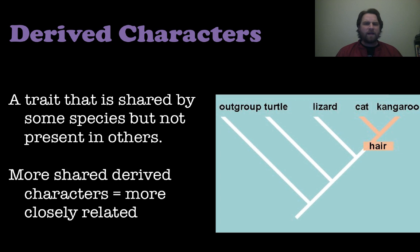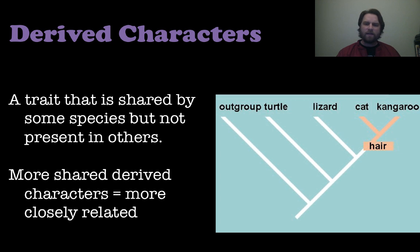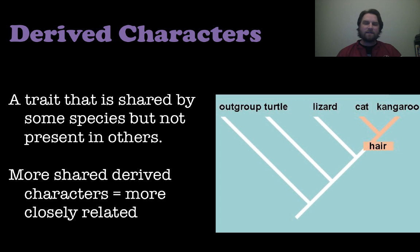The key thing to know about cladograms is derived characters — traits shared by some species but not present in others. The more shared derived characters two species have, the more closely related they are. For example, in a cladogram with a turtle, lizard, cat, and kangaroo, hair is a derived character that appears between the lizard and the cat, meaning the lizard and everything before it lacks hair, while cats and kangaroos have it.